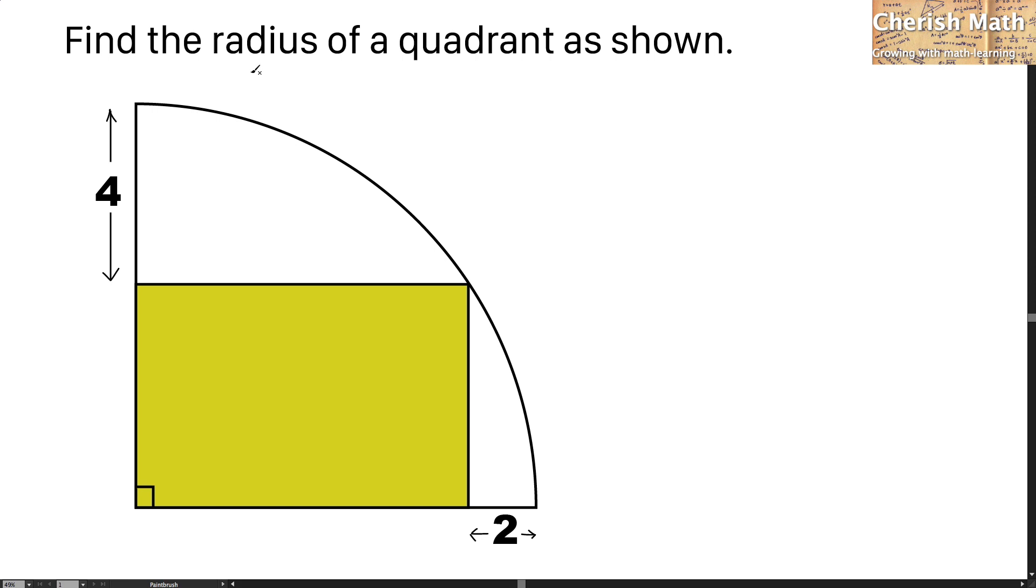Let the radius of the quadrant be r. For this distance, it is r minus 4. And for this part, it is r minus 2.